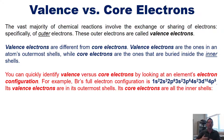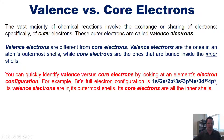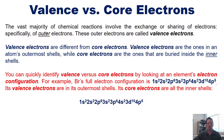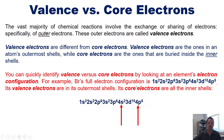You can quickly identify valence versus core electrons by looking at an element's electron configuration. For bromine, I look at all the principal quantum numbers — 1, 2, 3, and 4 — and ask which are the largest. The outermost shell is the 4th shell, so the 4s and 4p orbitals are further out than all remaining electrons, including the 3d's. These are bromine's valence electrons.